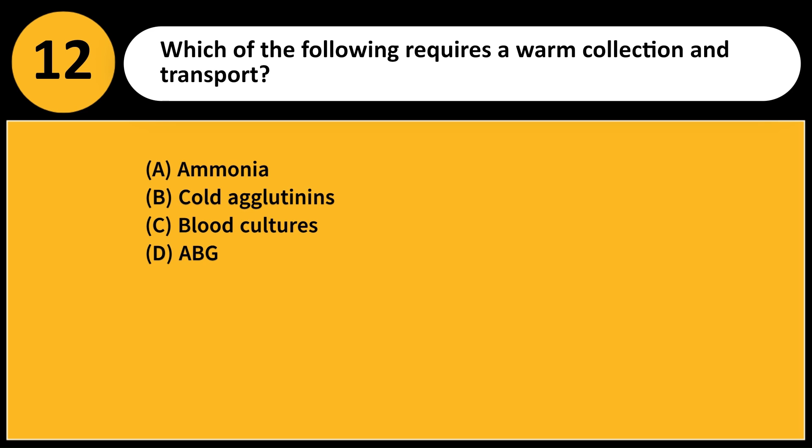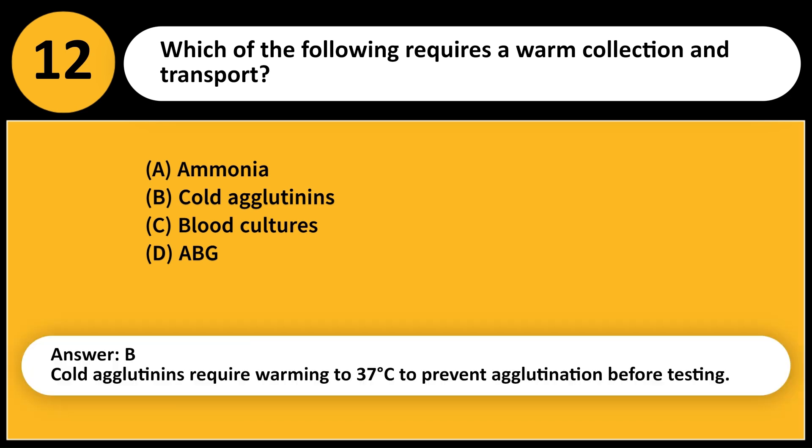Which of the following requires a warm collection and transport? A. Ammonia. B. Cold agglutinins. C. Blood cultures. D. ABG. Answer: B. Cold agglutinins require warming to 37 degrees Celsius to prevent agglutination before testing.